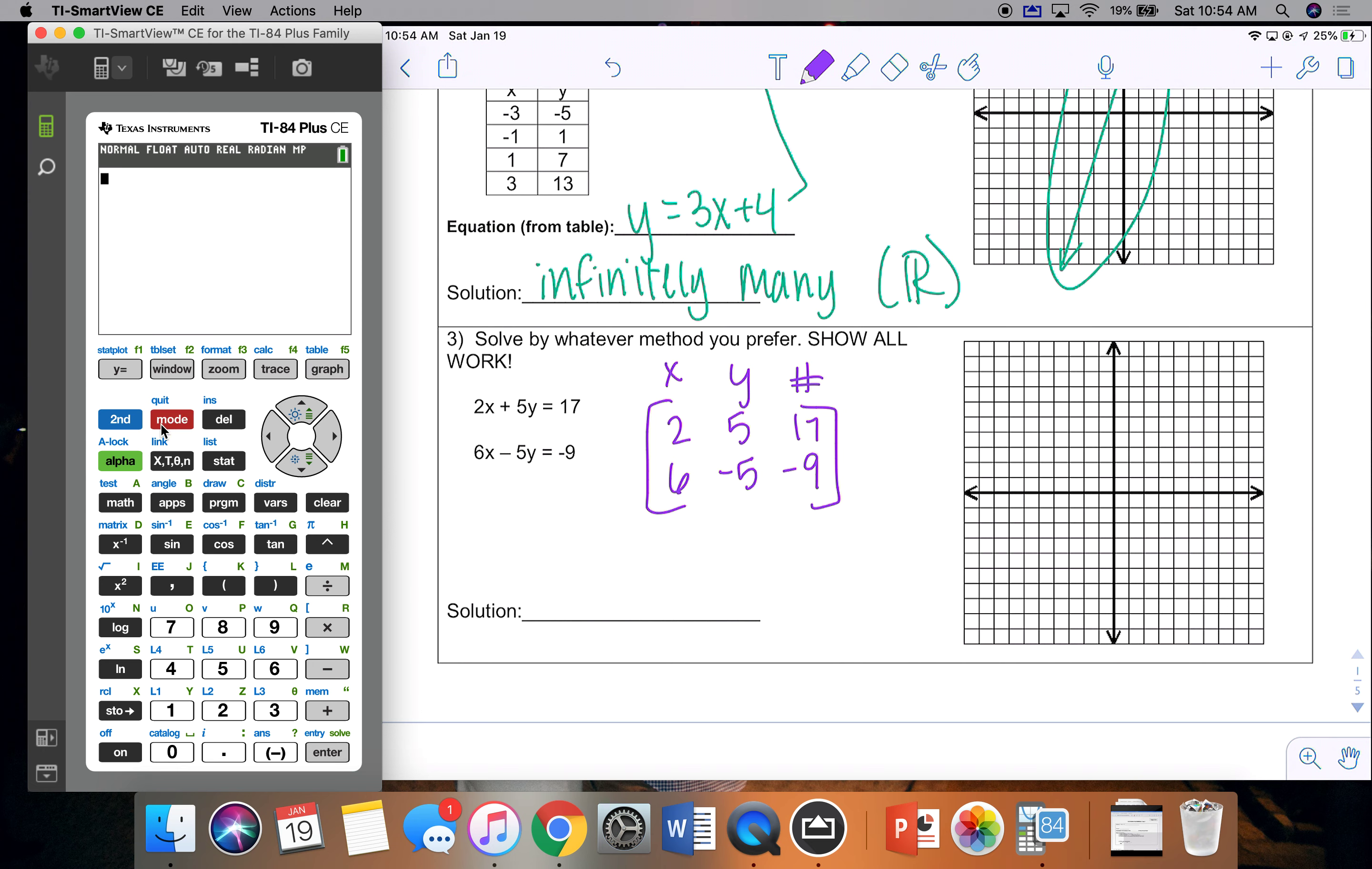So to enter a matrix, I click second matrix, scroll to math, option B, enter, alpha zoom, 2 by 3 is already selected. So I click enter, I'm going to rewrite my solution in case I messed up and can get at least some partial credit maybe depending on my teacher.